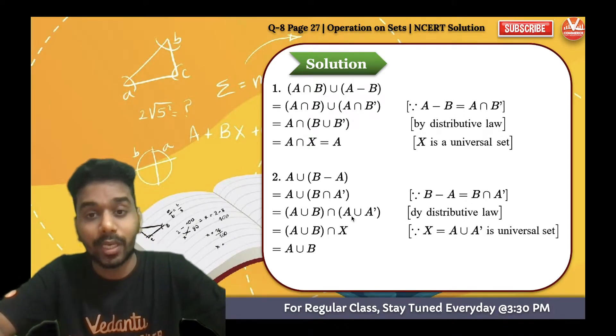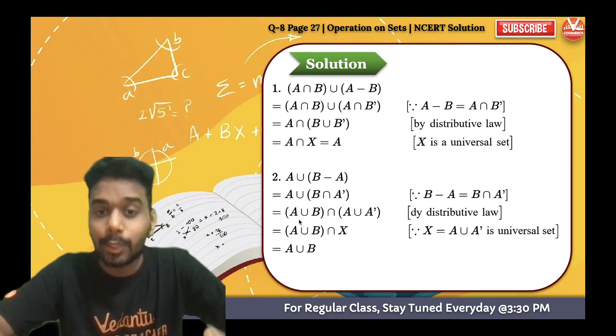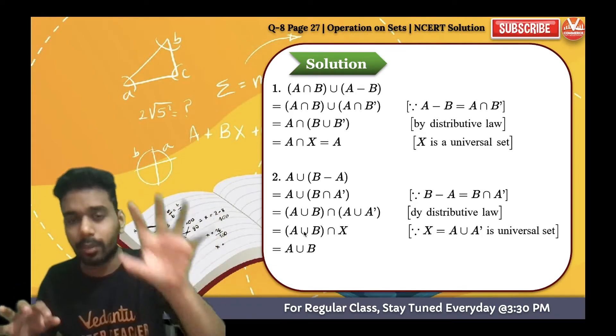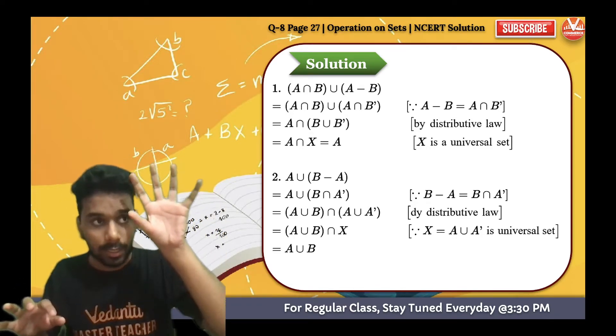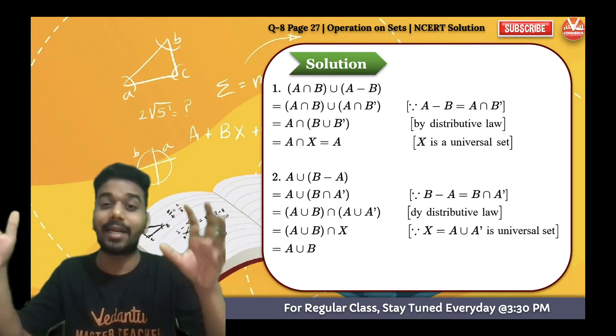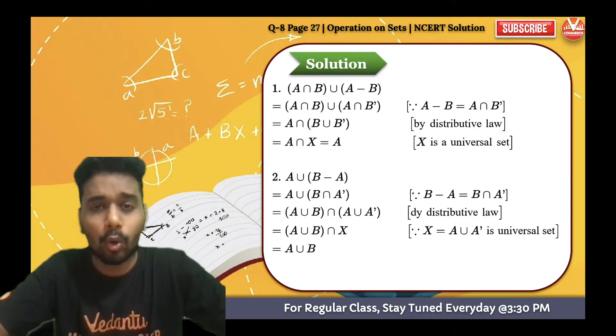So A union A not is a universal set. A union B intersection - now this is some set A union B, some set. Now intersection of this set with the whole universal, what is the common between universal and the set? It's the set itself, so answer is A union B.